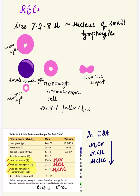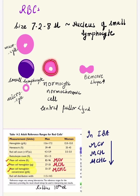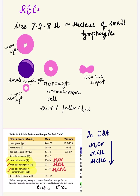Cells are called microcytic when their size is less than the normocytic RBC, or less than the nucleus of the small lymphocyte. In the next lecture I will cover macrocytic anemia, where the RBC size will be more than the nucleus of the lymphocyte. To show that RBC size has decreased, we always draw a small lymphocyte in the peripheral blood smear. The RBC has a disc-shaped appearance and when seen from the side it is biconcave, so in smears it appears disc-shaped or rounded.